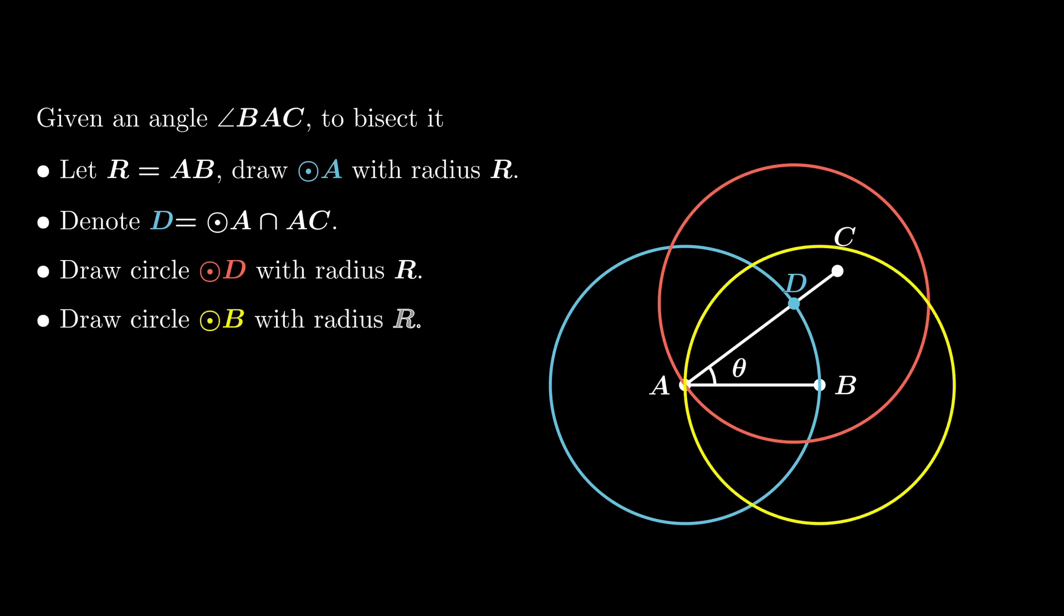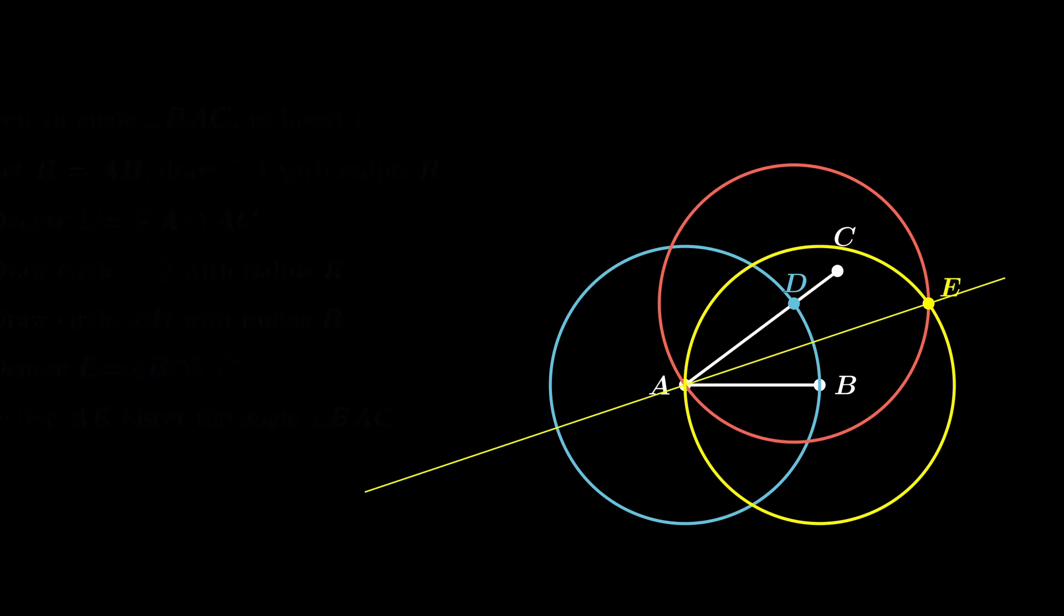Then we draw the circle of the same radius at the point D and B respectively. Now we denote E as their intersection, and the quadrilateral ADEB is a diamond. So the line AE bisects the angle BAC.